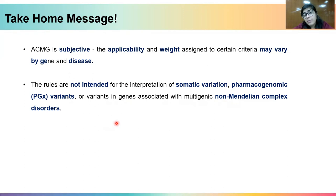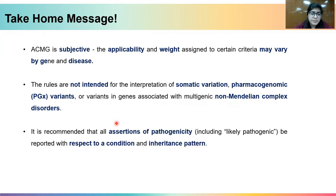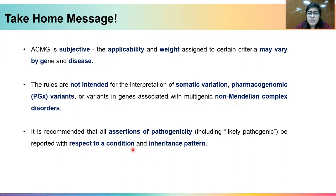ACMG criteria can only be reliably used in cases of Mendelian disorders. It is recommended that all assertions of pathogenicity, such as likely pathogenic, be reported with respect to a condition and inheritance pattern, which is consistent with the point that it can highly depend on a case-by-case basis.